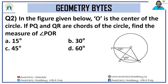Next, in the figure below, O is the center of the circle. If PQ and QR are chords of the circle, find the measure of angle POR. Look at triangle ORQ — if this angle is 50, the base angles are each 50. Now look at triangle POQ: if this angle is 35, this is also 35, because OP equals OQ equals OR as radii.